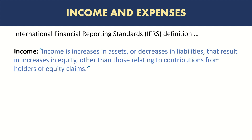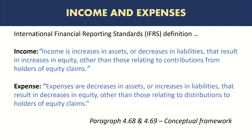We have already learned about assets, liabilities, and equity. Income is simply an increase in assets or a decrease in liabilities, but it results in an increase in equity. We have to exclude any increase in equity directly done by shareholders or owners — for example, if they provide additional funding in the form of ownership shares, that will not be considered income. All other business transactions that increase equity — practically speaking, an increase in profits — will be considered income.